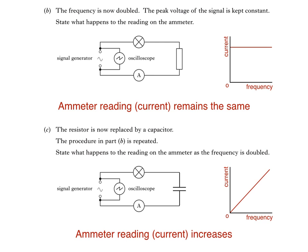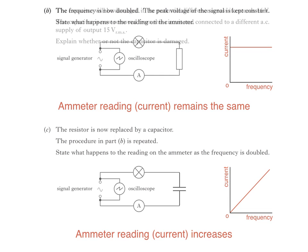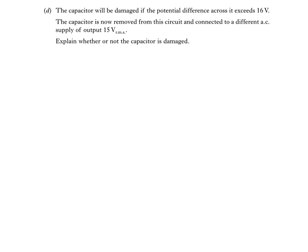So we're back on track now, and you would be expected to be able to answer the final part of the question. Part D says, the capacitor will be damaged if the potential difference across it exceeds 16 volts. The capacitor is now removed from this circuit and connected to a different AC supply of output 15 volts RMS. Explain whether or not the capacitor is damaged.